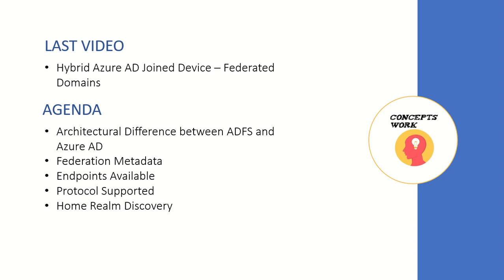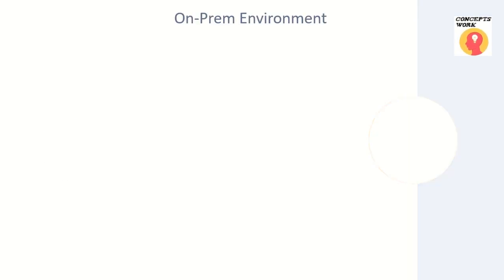We'll also look at the different endpoints available, which endpoint an application should access depending on the protocol it uses, and we'll finish with home realm discovery. The purpose of covering all this is to build a logical understanding of endpoints and how authentication works, which will make a lot of sense when we talk about conditional access.